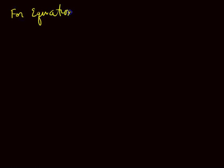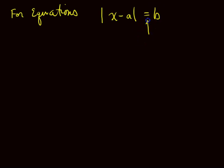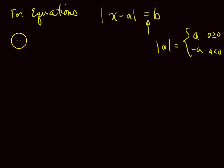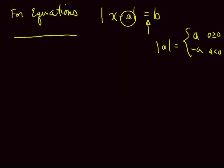First, for equations. You will have a form that looks like the absolute value of X minus A equals B, or you can get it to that form. The key here is the equals. Because we have the two parts — it is either A or the opposite of A — let's look at the number line. The absolute value on the number line talks about distance; we're using the distance between X and A.